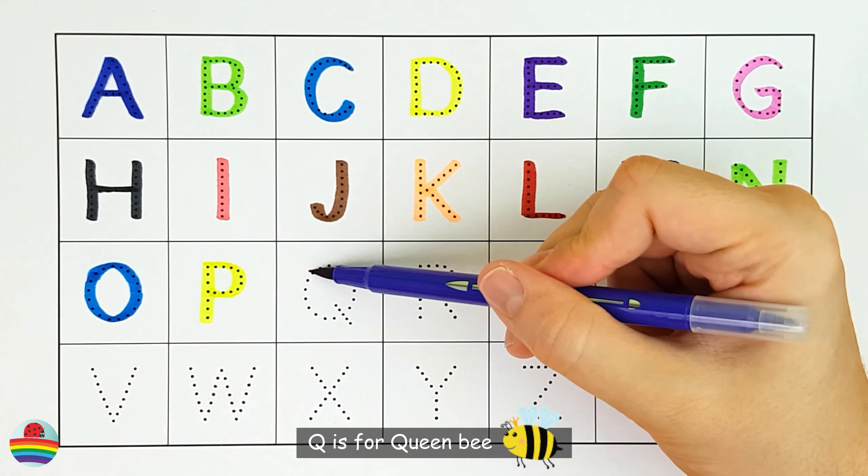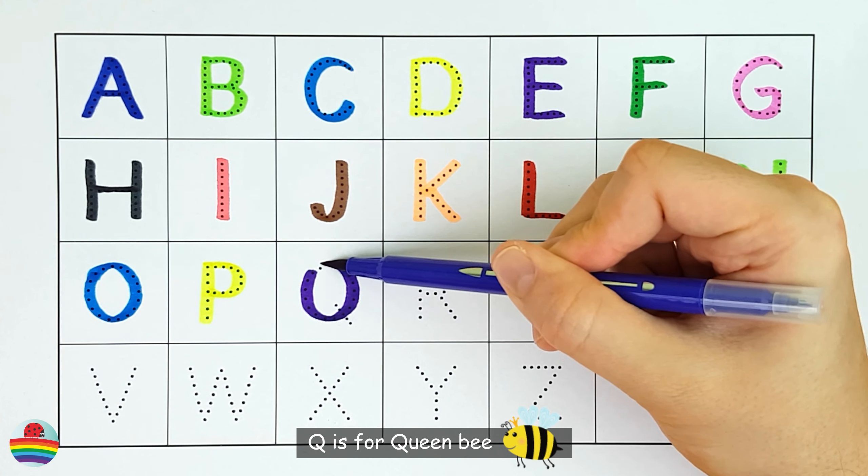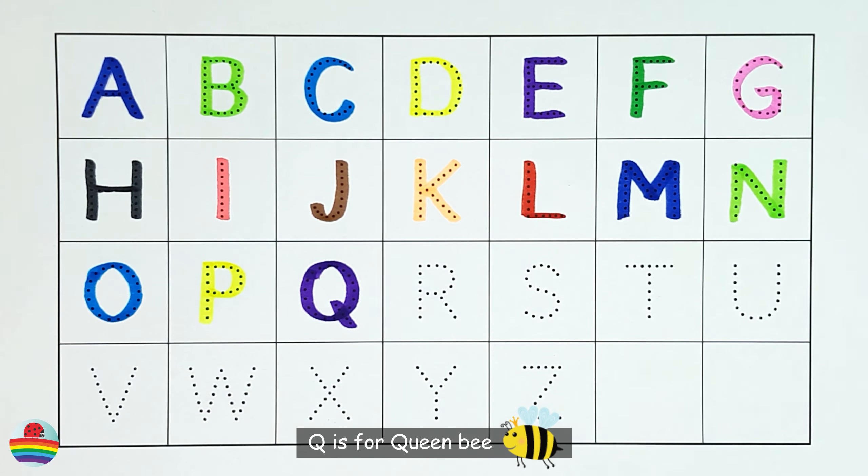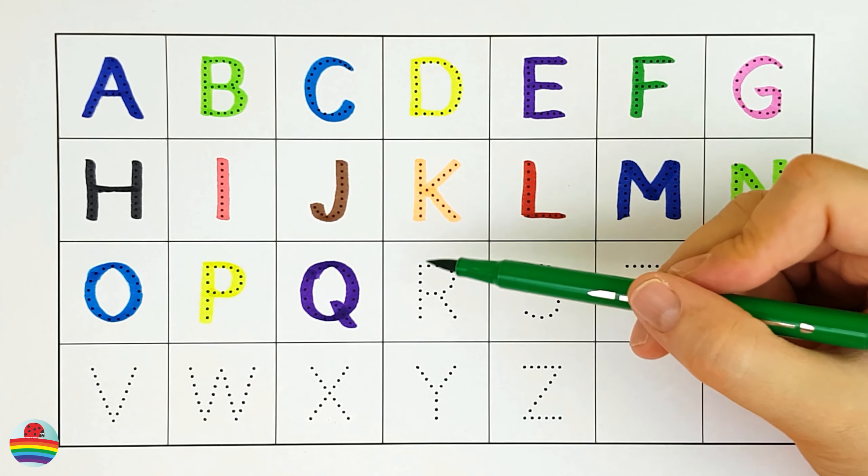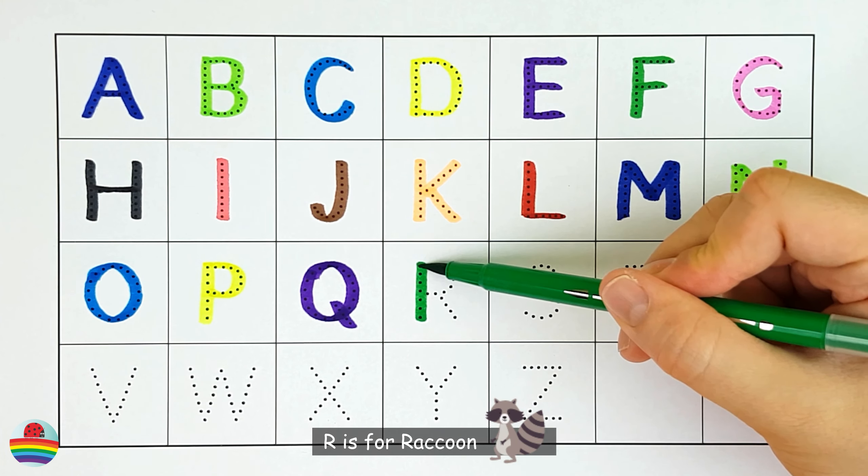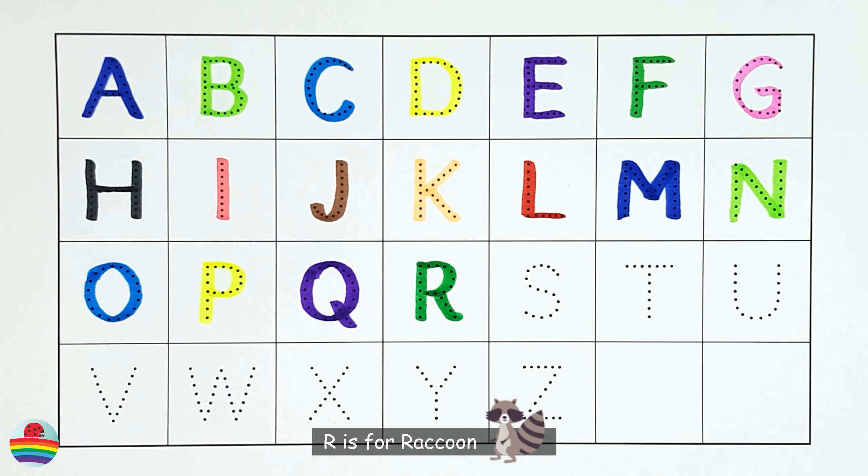Q. Q is for queen bee. Q. R. R is for raccoon. R.